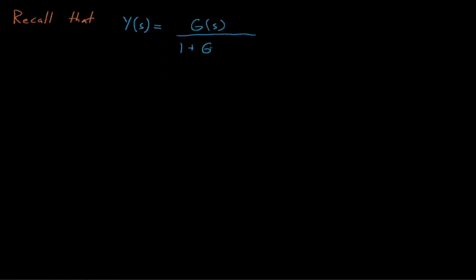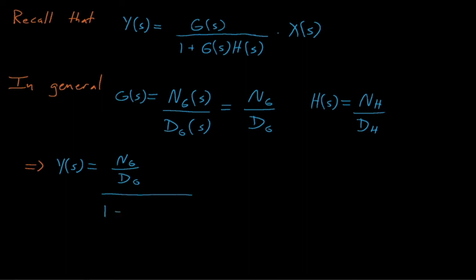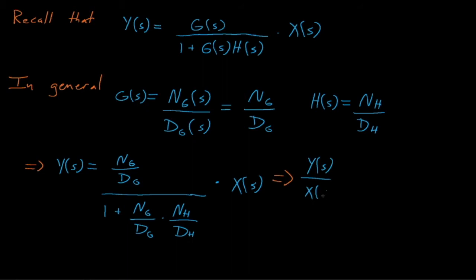It's worth remembering that g of s and h of s are generally fractional polynomials as a function of s. G of s, for example, might contain the numerator ng and the denominator dg, whereas h might be represented by the numerator nh divided by some denominator dh. Along these lines, we can simplify our transfer function so that it contains no double fraction terms, and we see that our characteristic equation becomes equal to dg times dh plus ng times nh.